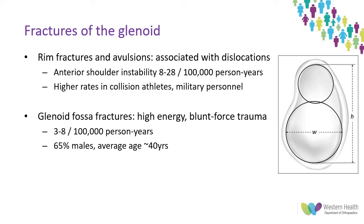Anterior shoulder instability episodes are relatively common, with a higher incidence seen amongst collision sport athletes such as rugby and AFL, and also military personnel. Glenoid fossa fractures are less common, often associated with motor vehicle or motorbike accidents. Males predominate and tend to be younger, while the female population tends to be older with slightly lower energy patterns.